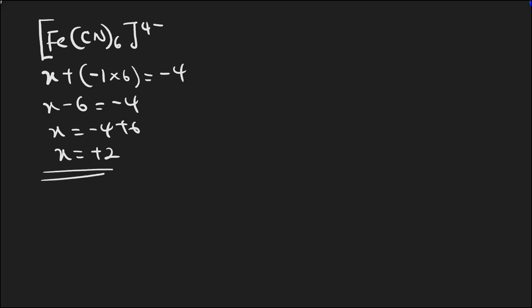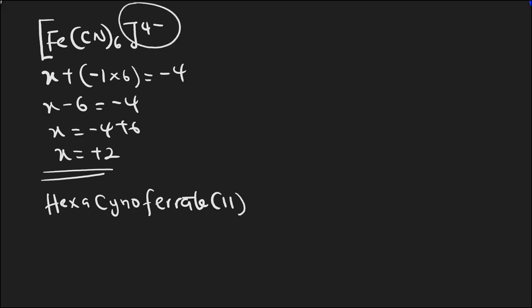Since this is a negatively charged complex, we name the ligands first: six cyanides give 'hexa,' and cyano for cyanide. The central metal is iron in anionic form — 'ferrate' — with oxidation state +2. The name is hexacyanoferrate(II) ion. Next, we calculate the number of unpaired electrons.